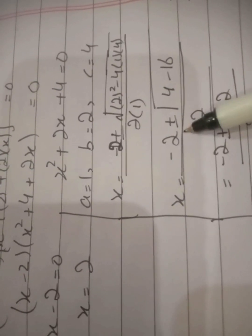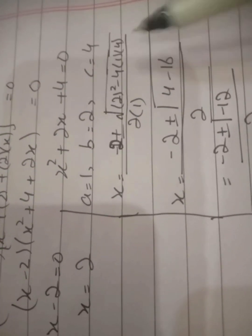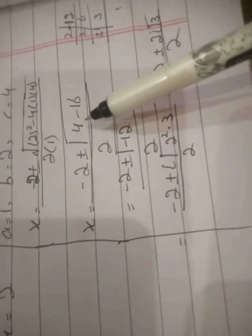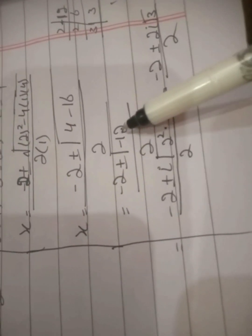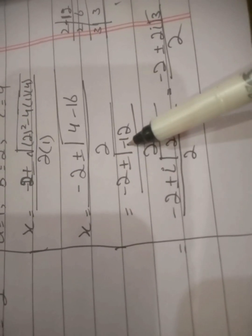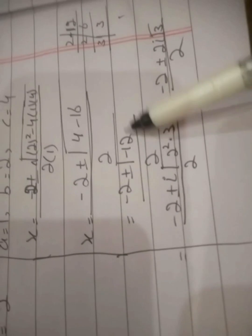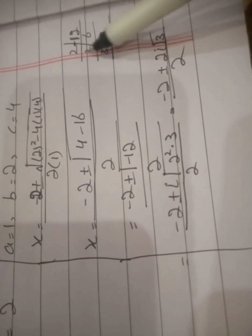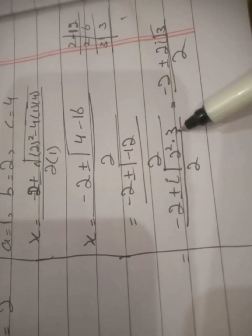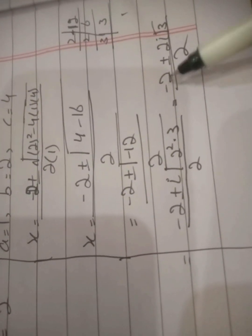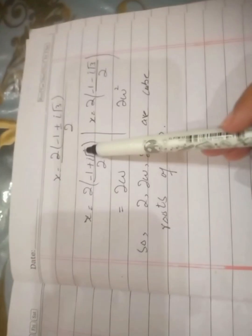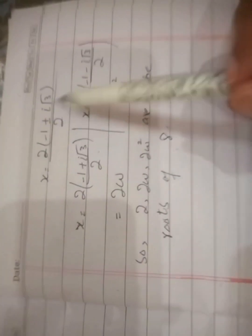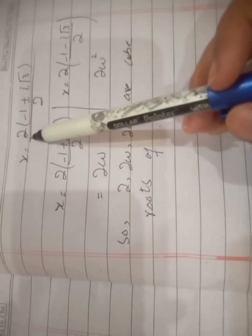Substituting: x equals minus 2 plus or minus square root of 2 squared minus 4 times 1 times 4, all over 2. This gives minus 2 plus or minus square root of 4 minus 16 over 2, which is minus 2 plus or minus square root of minus 12 over 2. A negative sign has appeared under the square root, so we write it in iota form. We simplify root minus 12 as 2 iota root 3. Dividing through by 2 gives x equals minus 1 plus or minus iota root 3 over 2.